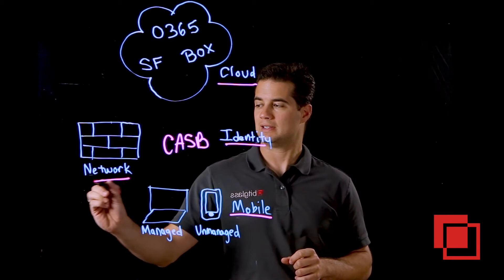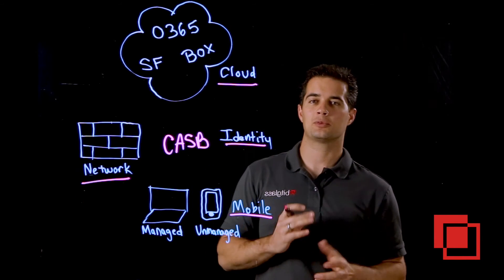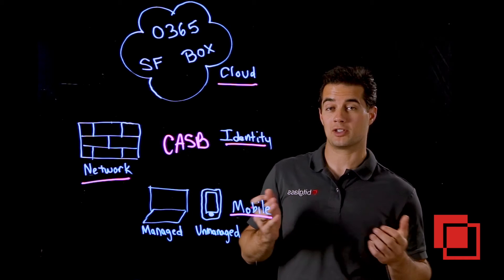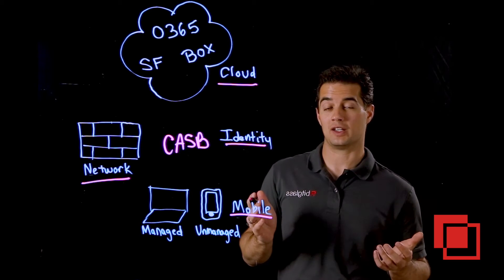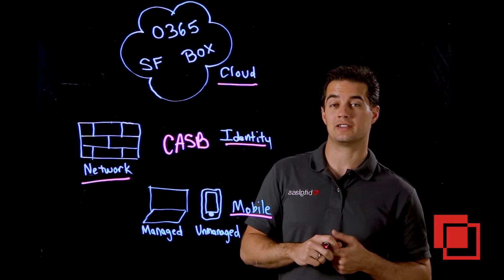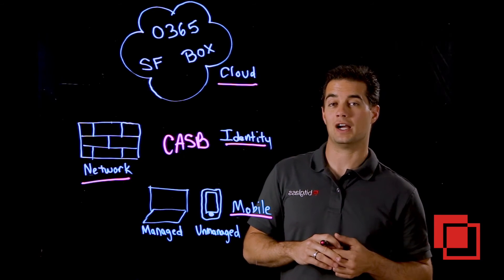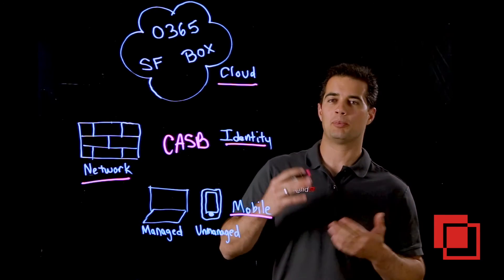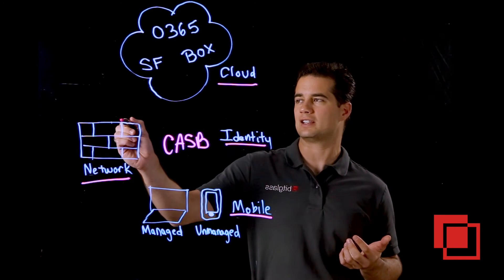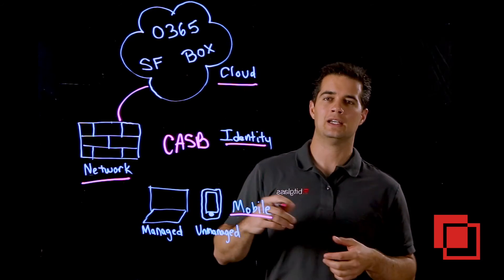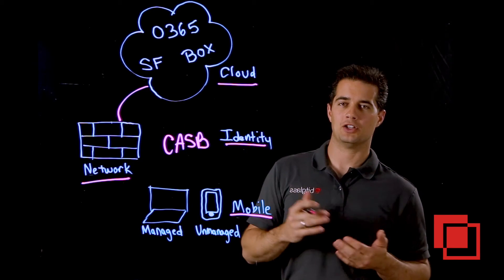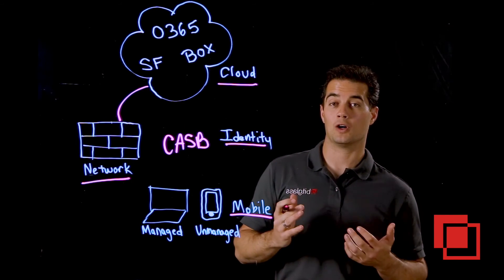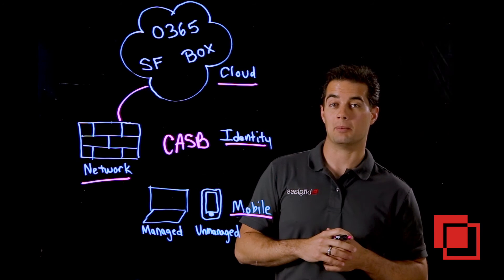The fourth piece is the network. Here's where a CASB will tie in with some of your premises security infrastructure such as the next generation firewall or a web proxy, and help you identify things like shadow IT, malware on your network, and even use of Tor or other types of anonymizers.